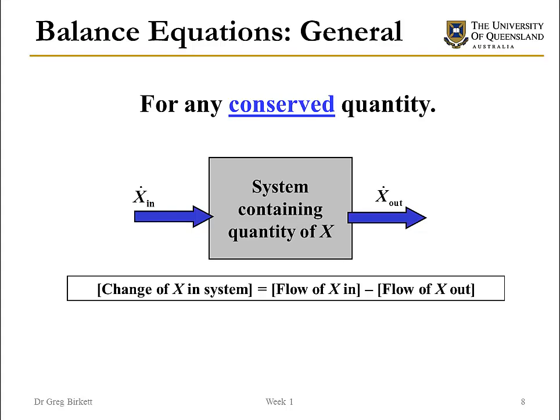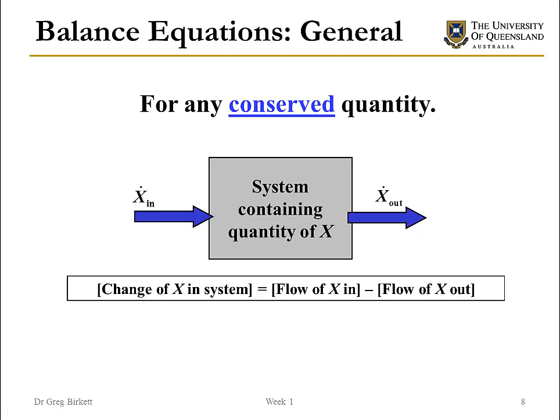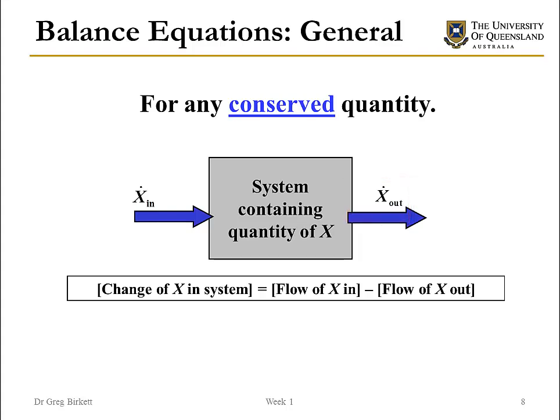Once we've defined what our system is, we can start to apply balance equations to these systems. On this slide we've got a very general balance equation. We've got a system in the middle which contains some quantity — I'm calling that quantity x. Into this system we've got some flow in and some flow out. The change of that quantity in the system is just the flow in minus the flow out. The amount of this quantity can change over time, but we're not generating any of it — it's conserved. So: in minus out equals accumulation.